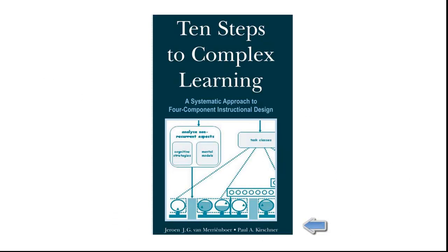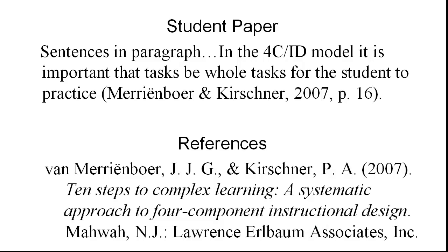As you can see, this is the book and at the bottom there are the two authors. The year goes into the citation followed by a comma, and then there's the page number. We start it with 'p.' — it's just a single page — and put in 16. And then we have the closing parenthesis and a period.